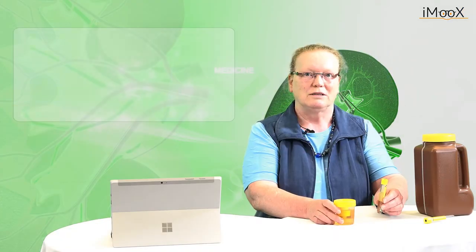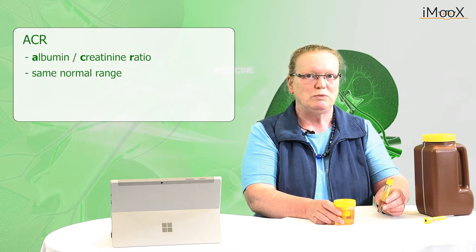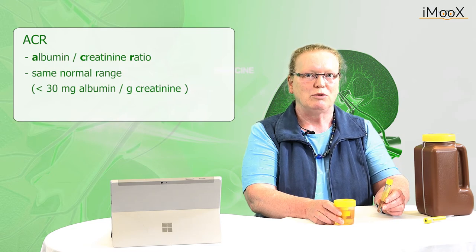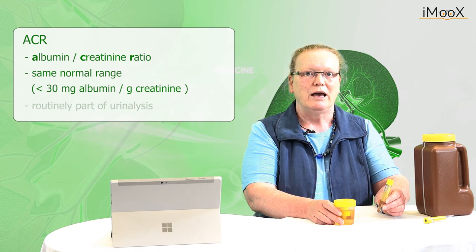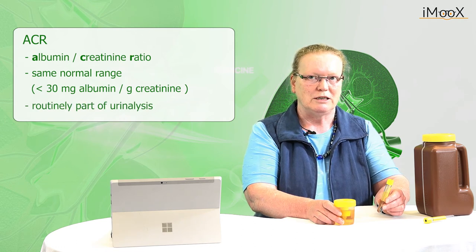The so-called albumin-creatinine ratio has the same normal range, which means less than 30 mg albumin per gram creatinine, and should be routinely performed in urine analysis.